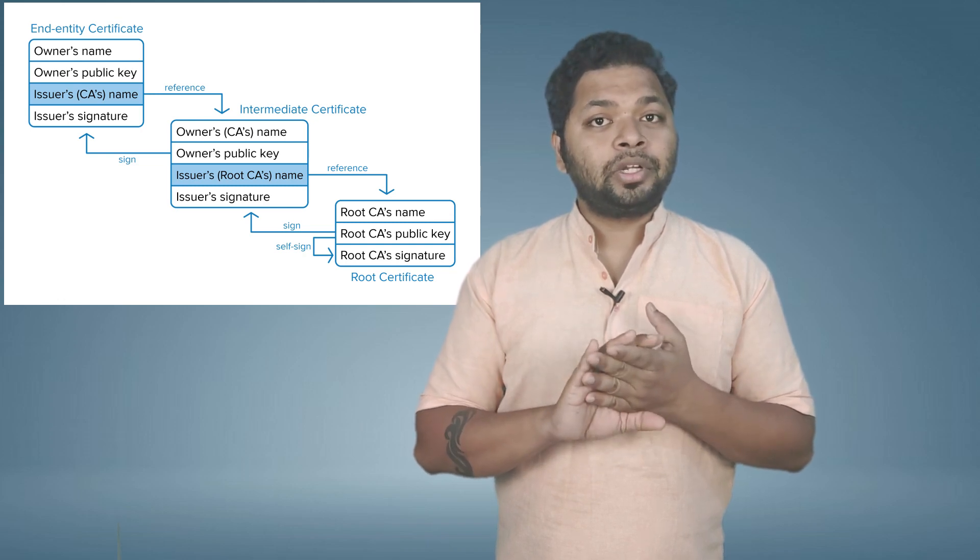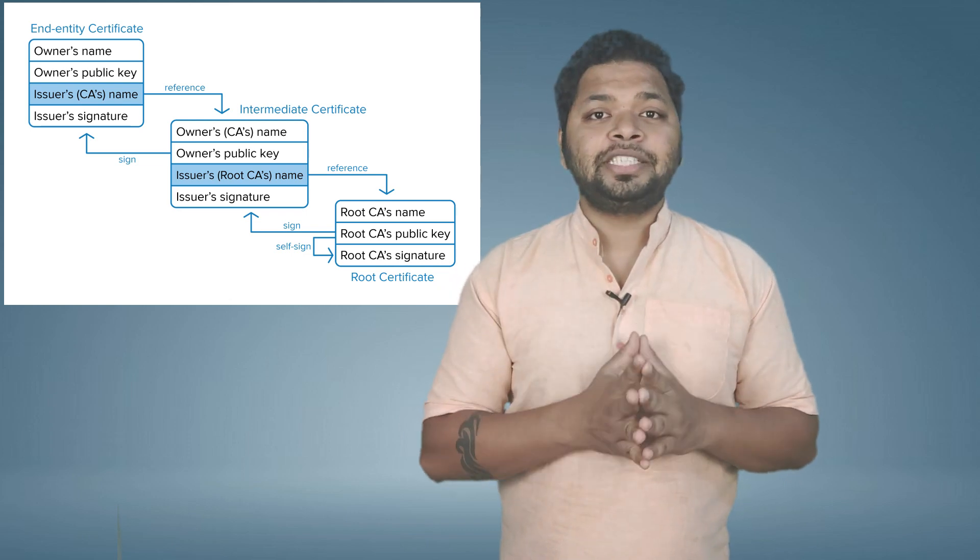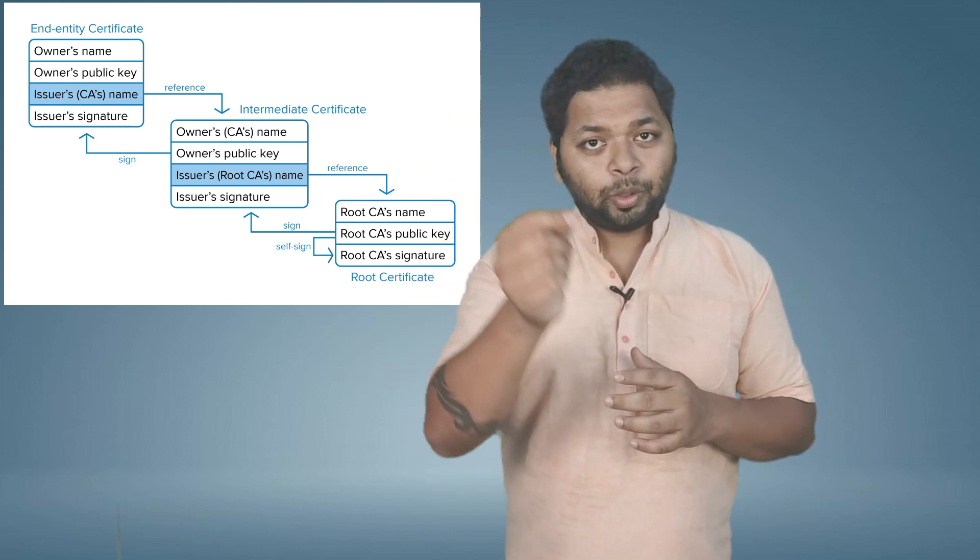There can be many levels of intermediate CAs, and verification proceeds through each level accordingly. A certificate is associated with two entities: the issuer — the root CA or intermediate CA that signs the certificate — and the subject — the entity that owns the public key inside the certificate. With this, let me conclude the topic.